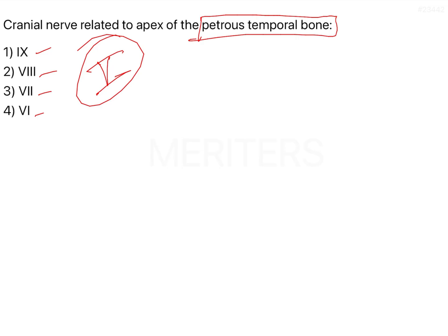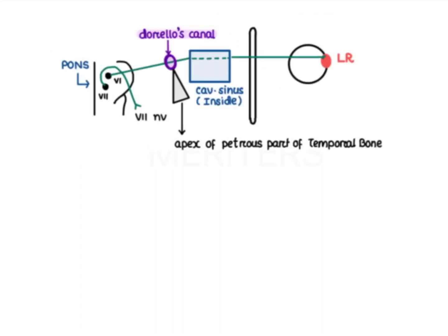The petrous temporal bone is related to two cranial nerves: cranial nerve number 5 and cranial nerve number 6. Cranial nerve number 6 is the abducent nerve, and it arises at the lower border of the pons. This particular nerve — nerve number 6, the abducent nerve.